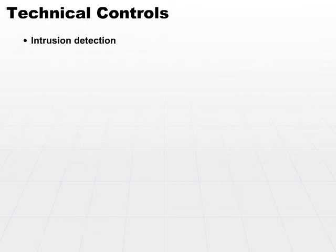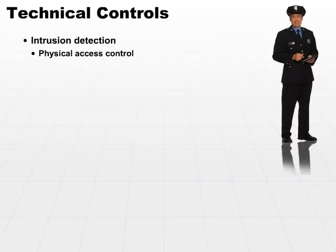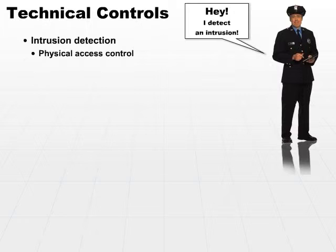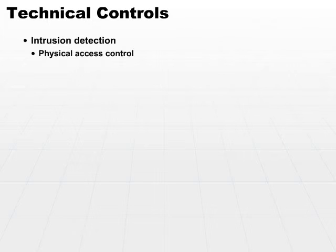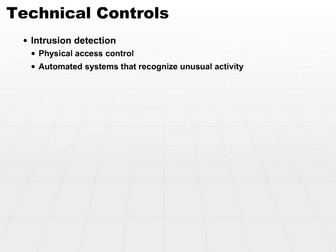In any case, you want to detect when an intrusion has occurred. There are many technical controls that we refer to as intrusion detection. One simple type of intrusion detection control is actually a physical access control — if a security guard watches someone unauthorized run into a room, he can say he detects an intrusion. But more often than not, we're referring to automated systems that recognize unusual activity and sound some sort of an alarm.